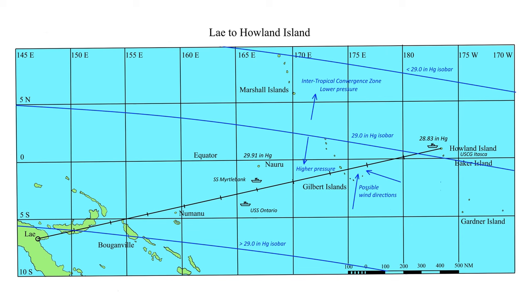On the equator, under the influence of the southern pressure systems, when flying eastwards towards low pressure, the wind will be coming from the right — from the southeast. In the diagram you can see that the 29-inch isobar must pass south of Howland and north of Nauru. And with the track from Lae to Howland of 078 degrees true, the wind must be from right of track, giving left drift.